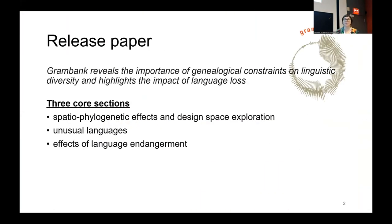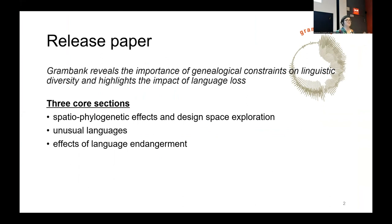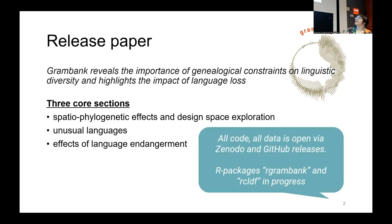Our release paper is called 'GrammBank Reveals the Importance of Genealogical Constraints on Linguistic Diversity and Highlights the Impact of Language Loss,' and it can be organized into three major themes: spatial phylogenetic effects — the effect of space and contact versus language history in terms of family trees on the structure and the design space — unusual languages, and effects of language endangerment. These are the ones I'm going to touch on today.